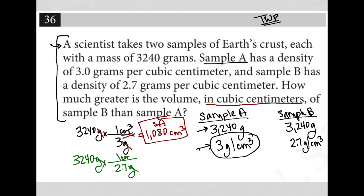And then this is still just one cubic centimeter on top. Go back to my calculator and figure out what is 3,240 divided by 2.7. 3,240 divided by 2.7 is 1,200. So that's equal to 1,200 centimeter cubed. So that's the volume of sample B.